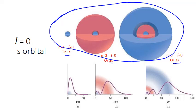That hard outer edge represents the distance from the nucleus within which you have a 90% probability of finding an electron. It's important to remember that the actual orbitals should be thought of more as an electron cloud that represents the most probable location of an electron — we can't define the exact location. You actually have some probability of finding an electron a little bit farther outside that edge.